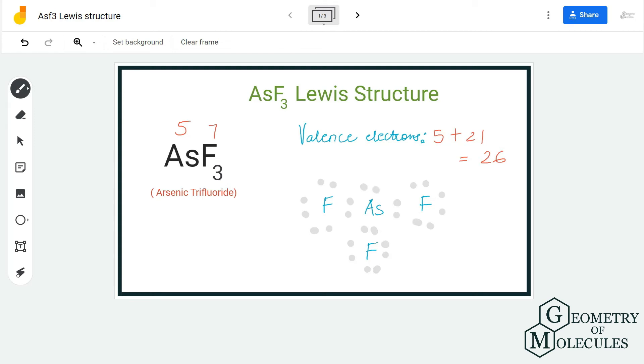These two electrons will be placed on the arsenic atom because it can have two more electrons to complete its octet. After doing that, we have used up all our valence electrons, all 26 of them, and there are complete octets for each atom